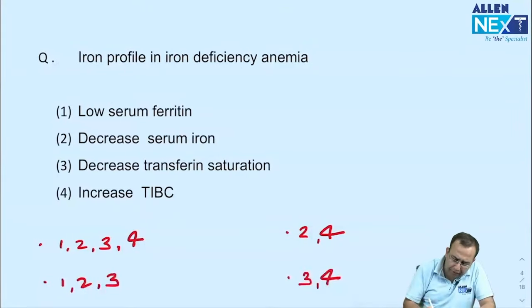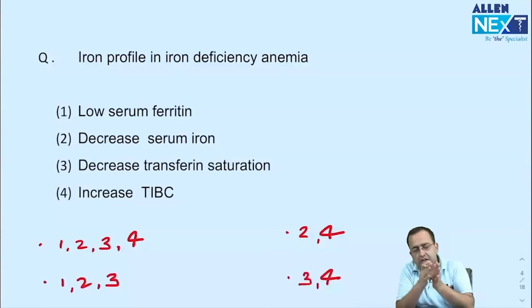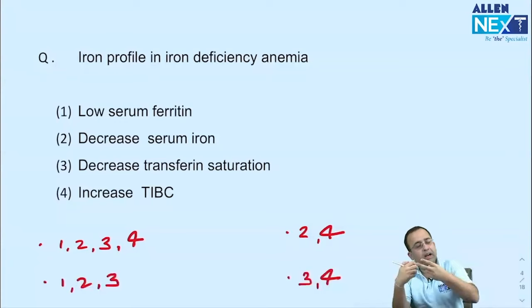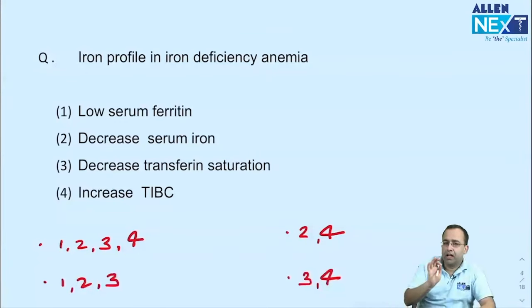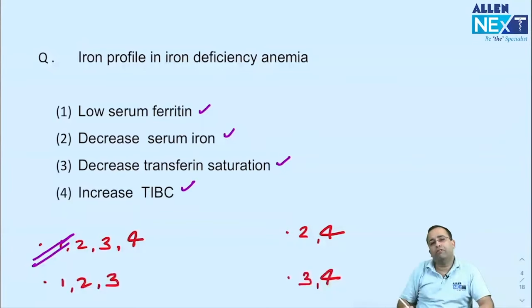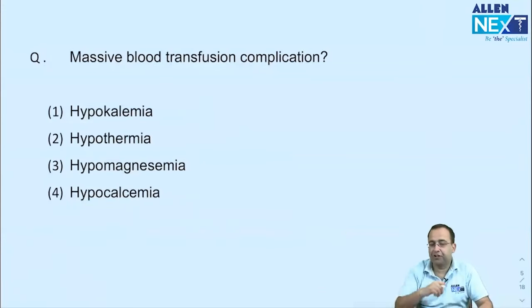Iron profile in iron deficiency anemia — a simple straightforward question. The examiner did not go into the three stages. The associations are: low ferritin, reduced serum iron, reduced transferrin saturation, and increased TIBC. All four findings are associated with iron deficiency anemia.